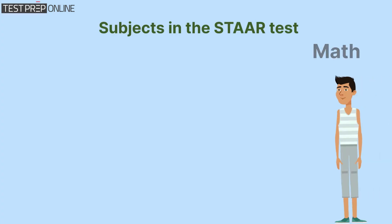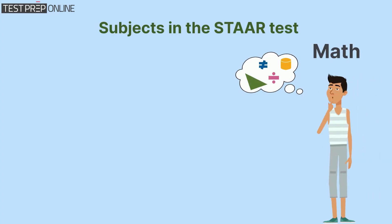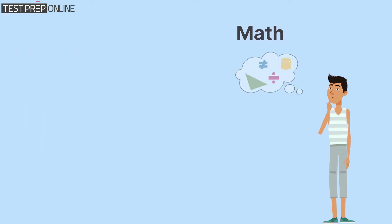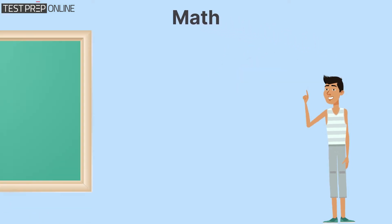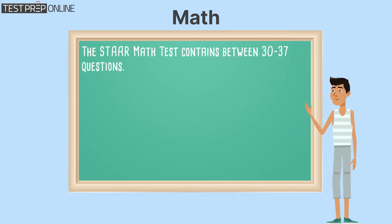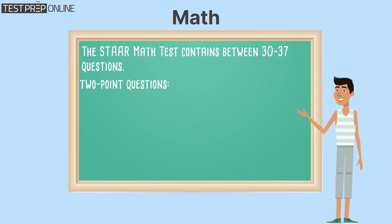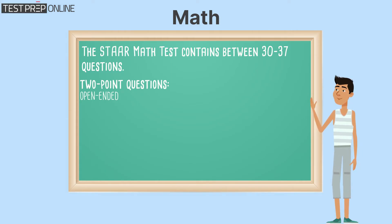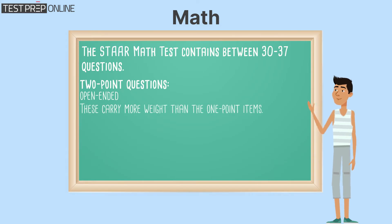Subjects in the STAR test include Math and Reading. The STAR math test contains between 30 to 37 questions. There are two-point questions, which are all open-ended and require students to provide more comprehensive answers. These carry more weight than the one-point items.